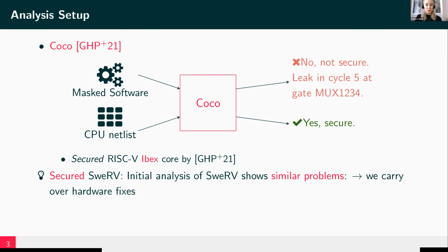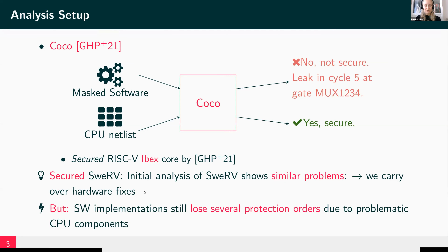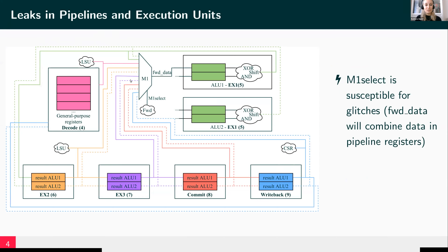When we did the first analysis with COCO of the Swerve core, we found similar problems. We carry over hardware fixes which were proposed for the small IBEX core to the bigger Swerve core. However, if we want to verify software implementations on the Swerve core, masked implementations will still lose several protection orders due to components in the CPU. One example are pipelines and execution units. In this figure you see the pipeline stages of the Swerve core, and you see a multiplexer which will forward data from the correct pipeline stage to the ALU. The problem is that the select signal of the multiplexer will glitch and therefore the forwarded data might glitch and combine all the inputs of the multiplexer. If we have shares of the same native value stored in our pipeline registers, forwarded data will potentially combine all these shares and we will have a leak.